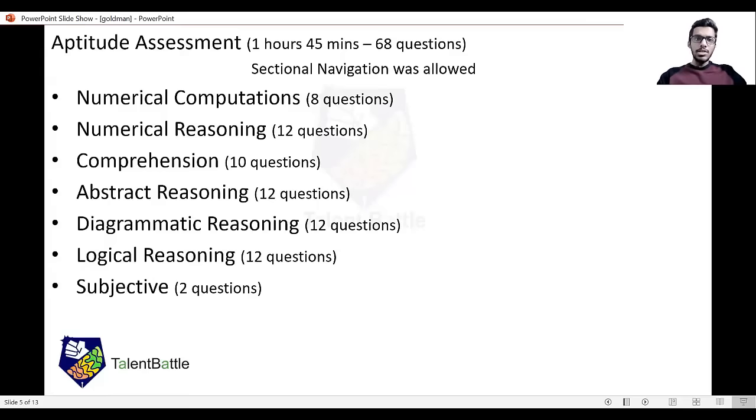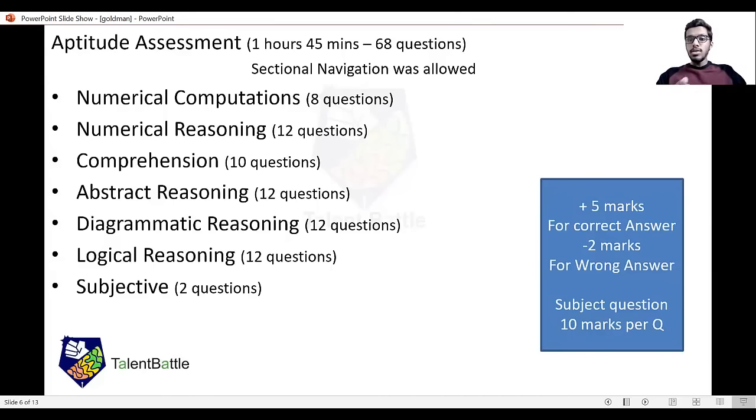The marking scheme was: you were given five marks for a correct answer, there was negative marking of two marks for a wrong answer, and the subjective questions, the two questions, were for 10 marks each.